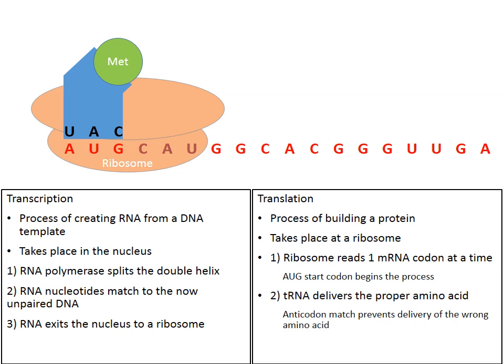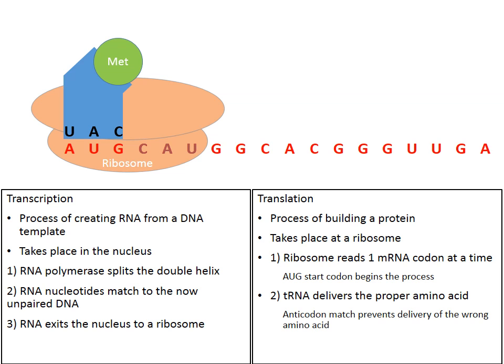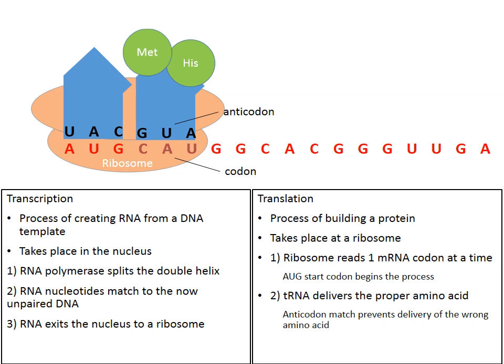The ribosome moves to the next codon. The next codon flashing is CAU. tRNA is going to bring over the proper amino acid. We find CAU on the genetic code chart — it codes for the amino acid histidine, abbreviated HIS. Notice how the anticodon GUA is a perfect opposite match of the codon CAU. This means it's the proper amino acid and allows bonding to proceed. The two amino acids bond and the first tRNA drifts away.